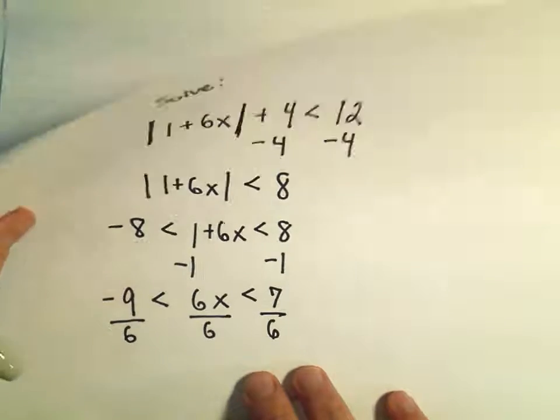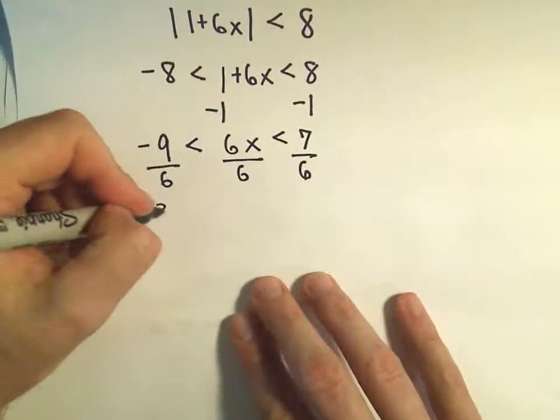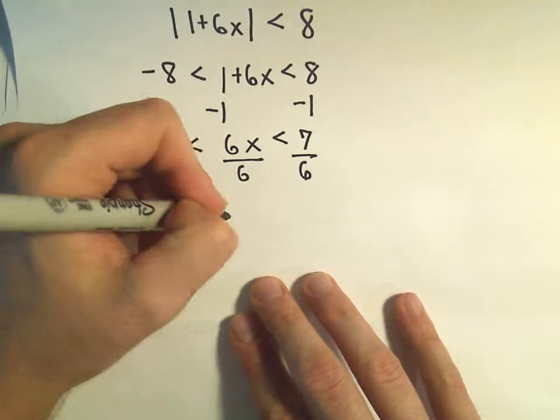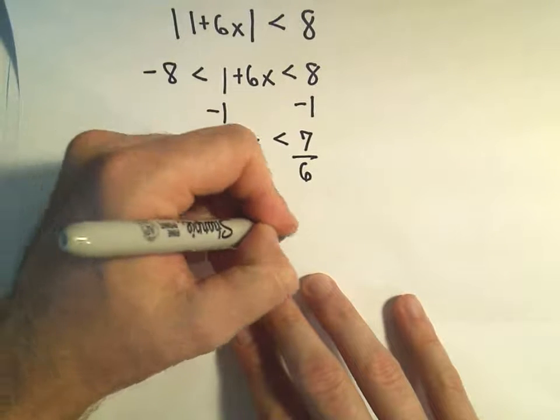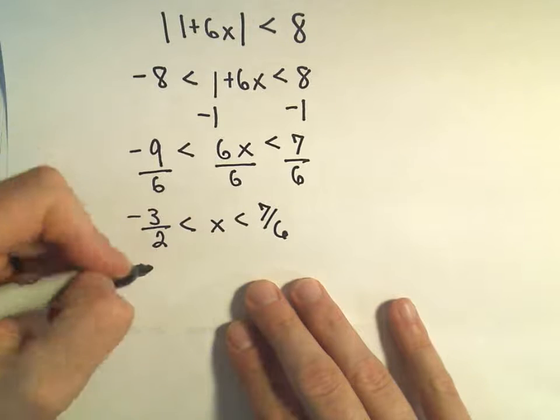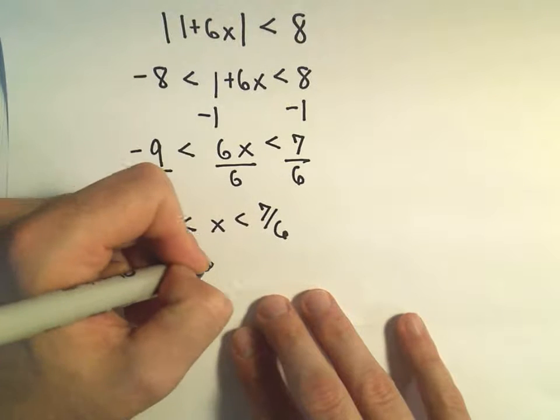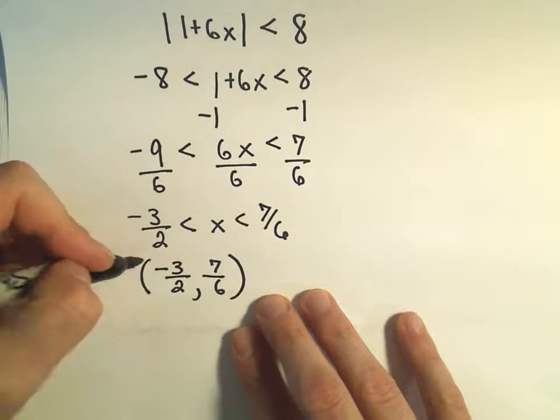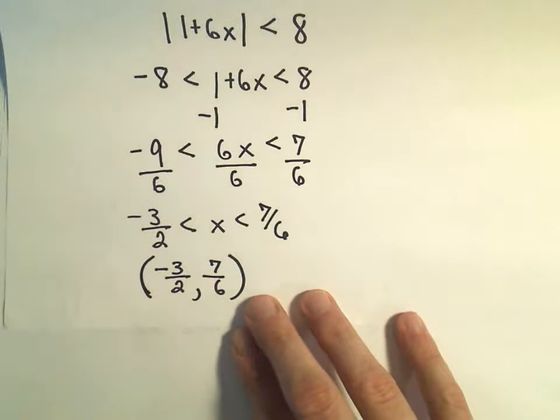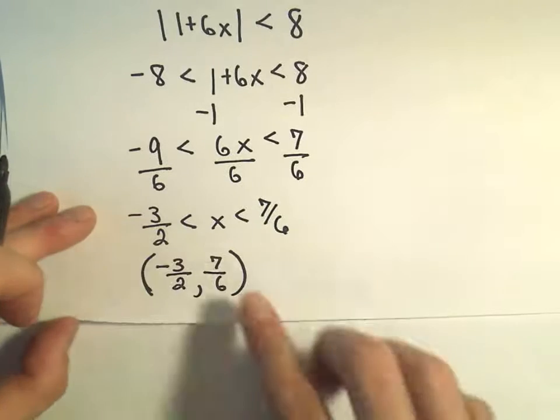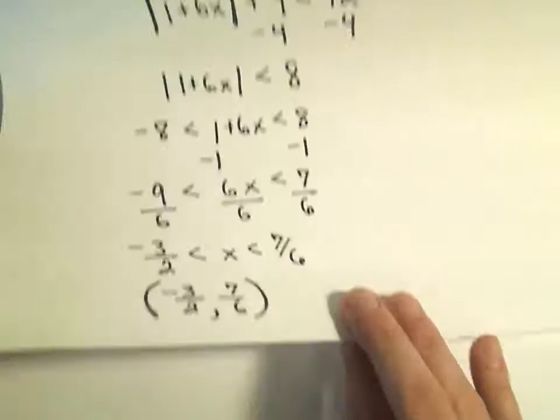So on the left I can reduce that and make it negative 3 halves, less than x, less than 7 over 6. So in terms of interval notation, I can write this as negative 3 halves, comma, up to 7 sixths, parentheses around those because we don't include those values in our solution.